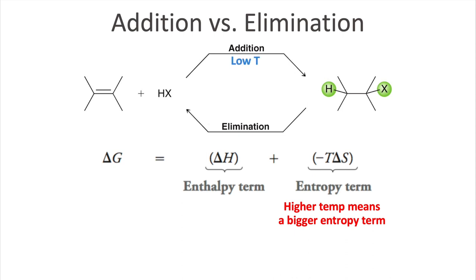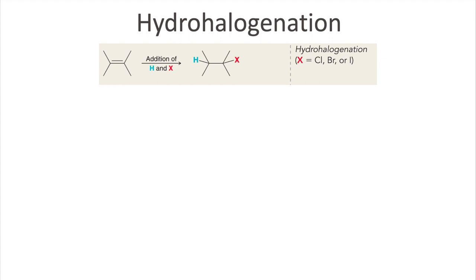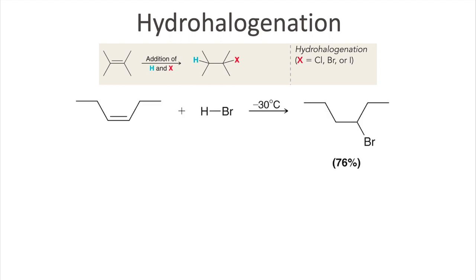Now that we are more familiar with alkenes and addition reactions, let's start discussing actual reactions. Our first one is hydrohalogenation — adding a hydrogen and a halogen across that double bond. For example, if we have this alkene and add HBr, we form an alkyl bromide product. Notice that if the alkene is symmetrical, the Br can go on the left or right and it will be the same molecule.